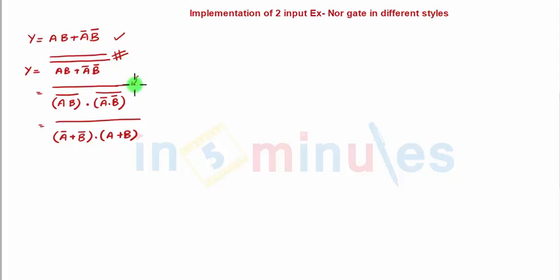So this bar remains as it is. However, the underneath bar for De Morgan's we have already seen that De Morgan's is nothing but if it's A plus B the whole bar, it will be individual bar and plus get substituted with the product. So this is OR and AND substitutions, and if it is AB the whole bar, then it's nothing but A bar plus B bar.